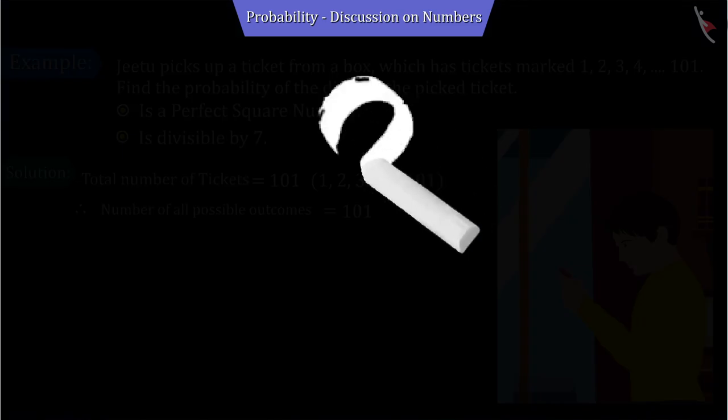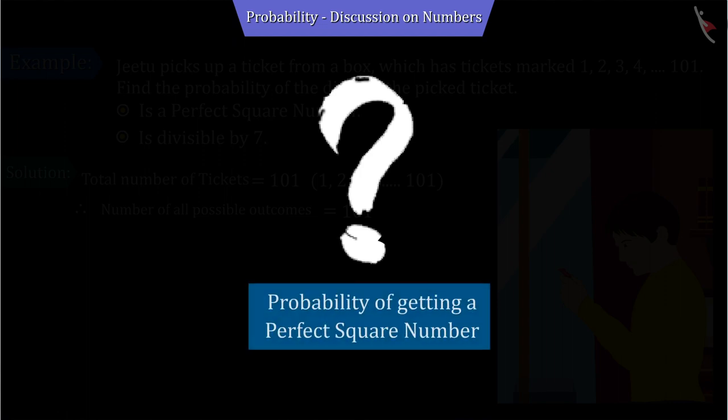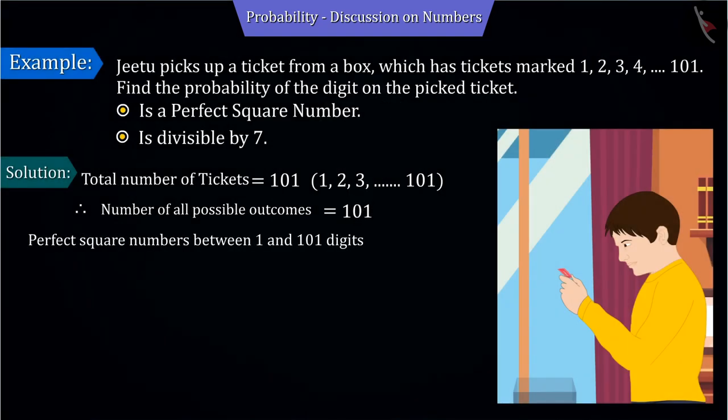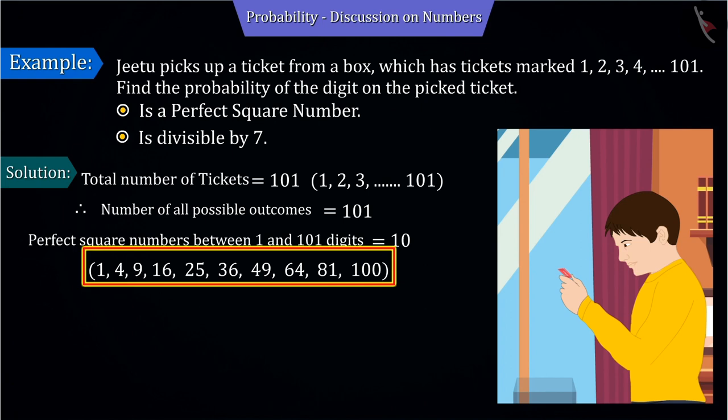We have to find the probability of getting a perfect square number on the ticket. Between the given numbers 1 to 101, there are a total of 10 perfect square numbers: 1, 4, 9, 16, 25, 36, 49, 64, 81, and 100 which are perfect squares.